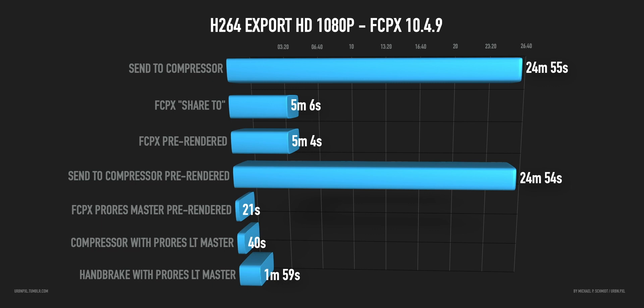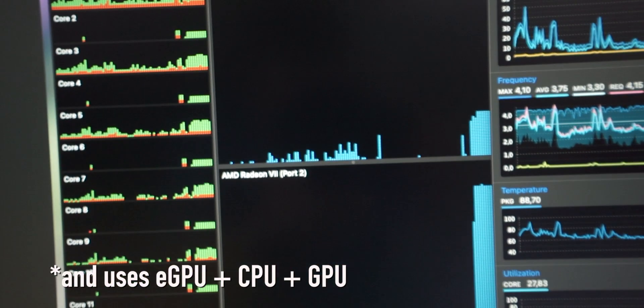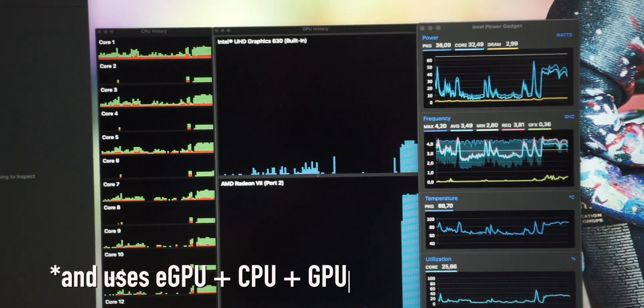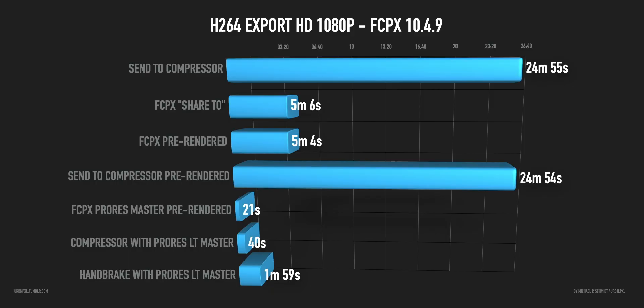If you have a pre-rendered timeline and export a ProRes master file — ProRes LT, HQ, whatever your timeline is set to — it takes 21 seconds for that project. Then if you put that ProRes file into Compressor and export H.264, it takes 40 seconds. So that's roughly one minute total compared to 24 minutes — the difference is huge. If you use Handbrake with the YouTube preset it takes two minutes, so longer, but I think you get better quality and more efficient encoding.